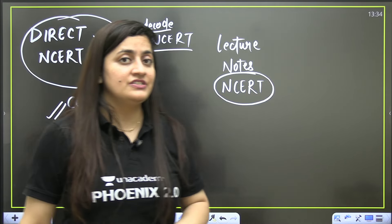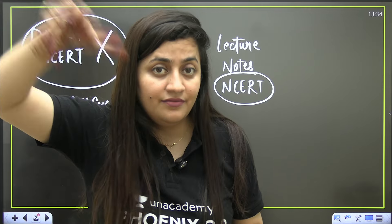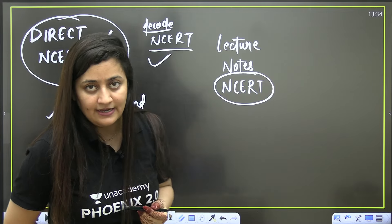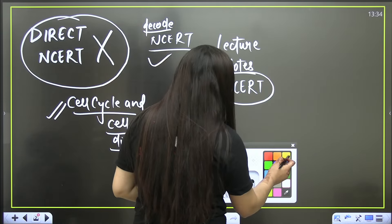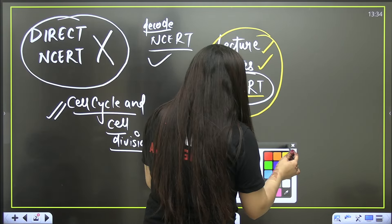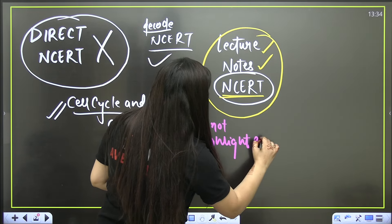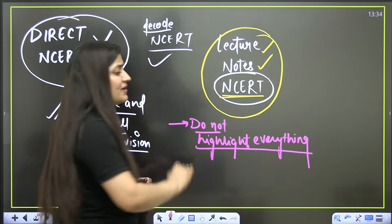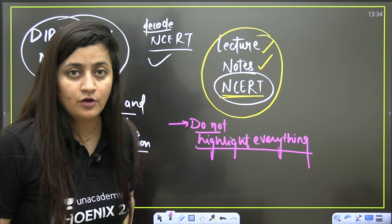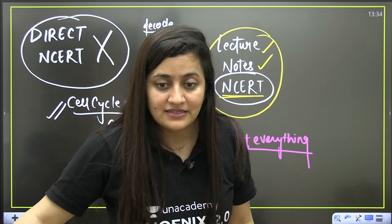It's about decoding NCERT. In each and every line of NCERT there is a question — they can pick up words and relate them with another word given in NCERT, and accordingly ask questions. So the most important thing: you have to decode the NCERT. The very first step is to attend the lecture, make your notes, and then go for NCERT reading. And it's not mandatory that you have to highlight everything. Do not highlight everything written in NCERT.